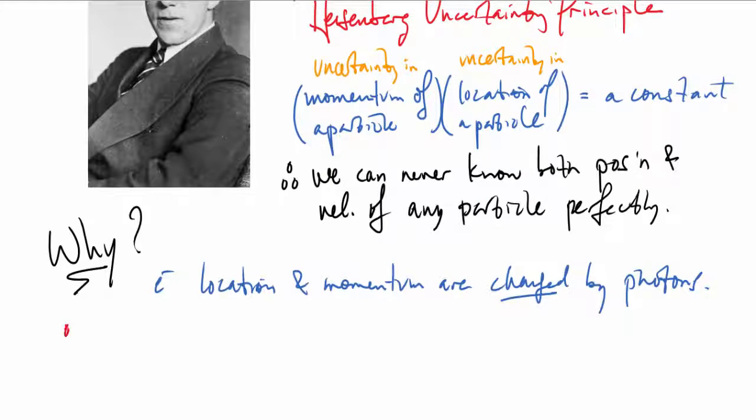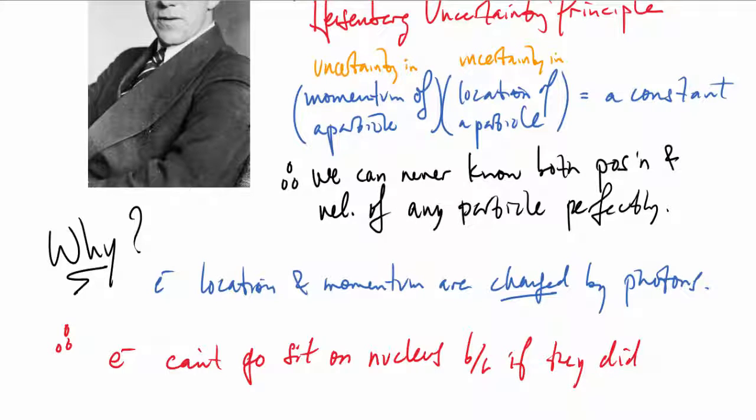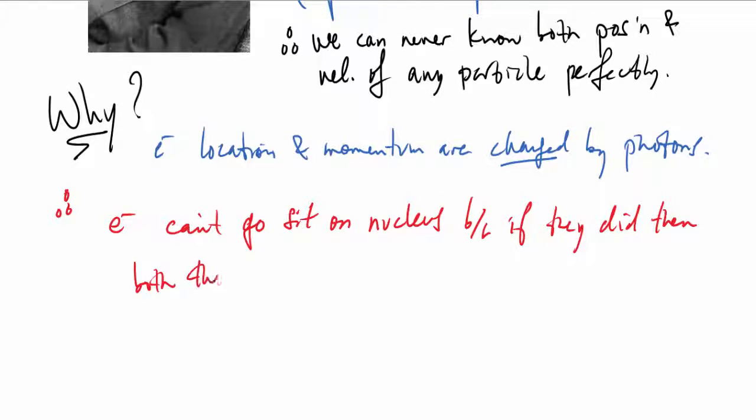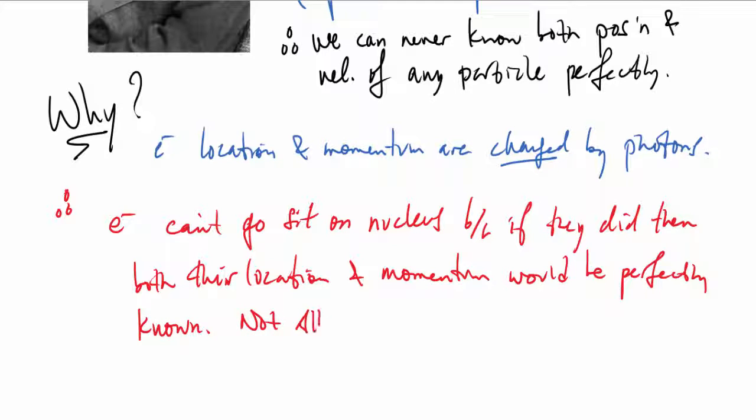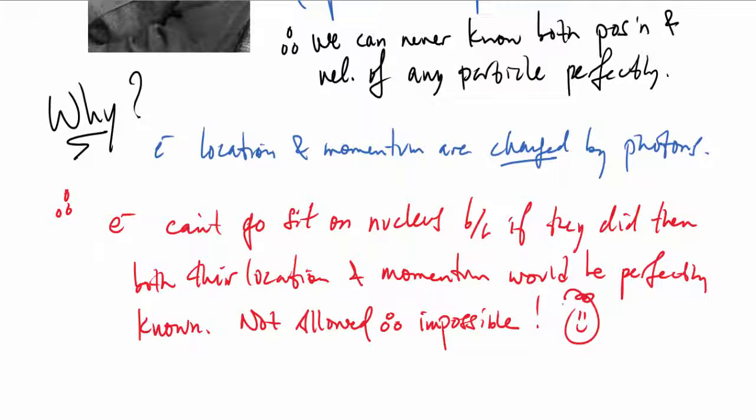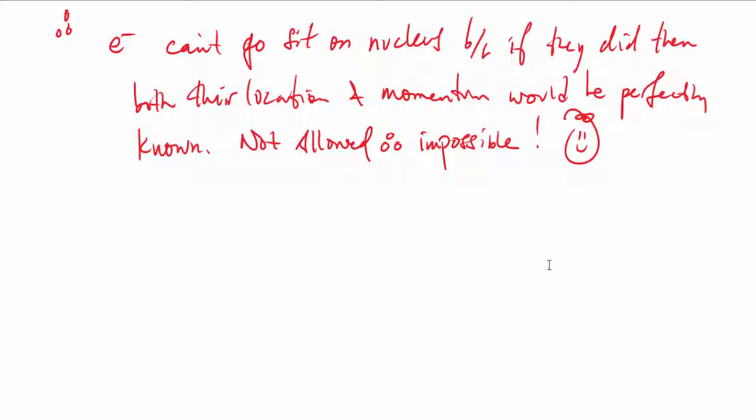The reason is because the electron location and momentum are both changed by photons. If we want to sense an electron, we have to detect a photon that bounced off of it or was otherwise affected by it, which will change the electron's position or momentum. Electrons can't go to the nucleus because if they did, both their location and momentum would be perfectly known—they'd be on the nucleus not moving—and that's not allowed by Heisenberg's principle.